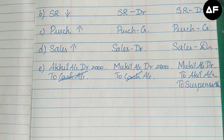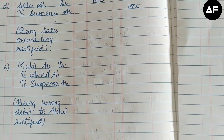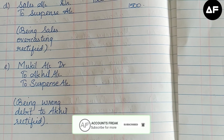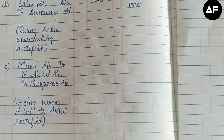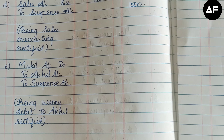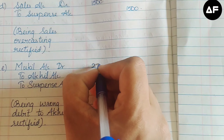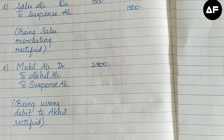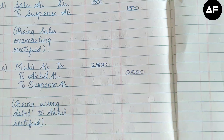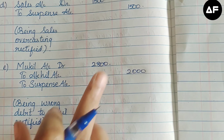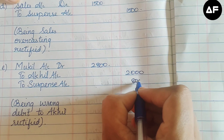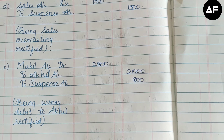The rectification entry is: Mukil Account Dr. 2800 — to Akil Account 2000 and to Suspense Account 800. Mukil is the actual person who should receive the debit of 2800. Akil, wrongly debited with 2000, is now credited to cancel it. The remaining 800 difference goes to Suspense Account so that debit equals credit.